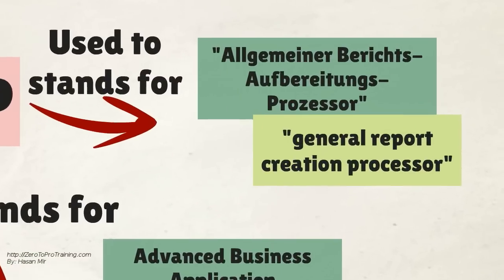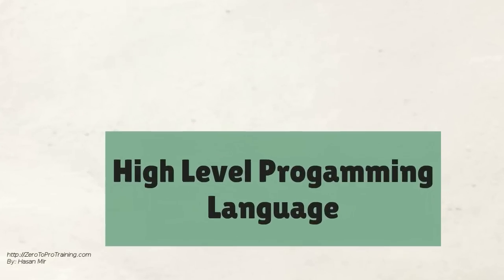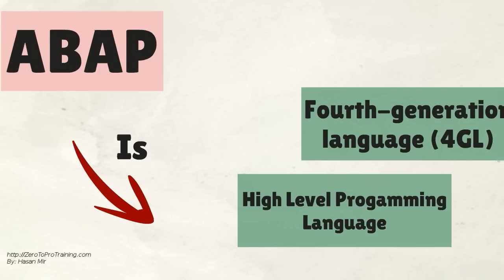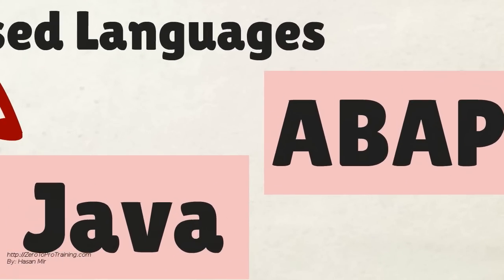Originally, ABAP was used to stand for a German phrase meaning General Report Creation Processor. It is considered to be a high-level programming language like C and Java. ABAP is one of the many application-specific fourth-generation languages developed in the 1980s.